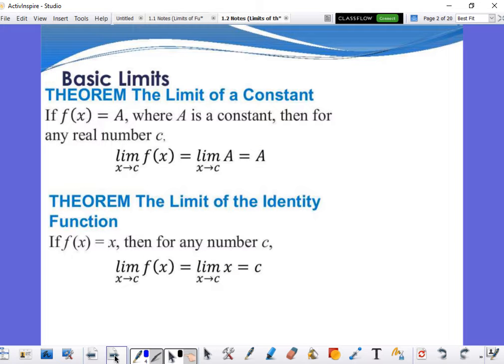So we have basic theorems for the limit right here. If f of x is equal to a, where a is constant, what does constant mean? It's not changing, right? So does it have a variable? No, no variable. So like on a warm-up today, that would be the plus 1 part of it. It doesn't have a variable attached to it. It's constant. So right here, then for any real number c, limit as x approaches c, the limit is actually equal to the number of what we have. So it is going to be that number.